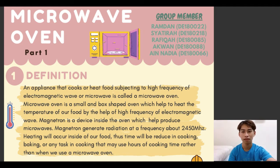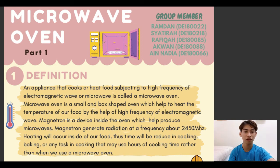A microwave oven is an appliance that cooks or heats food by subjecting it to high frequency electromagnetic waves. It is a small, box-shaped oven that heats food using high frequency electromagnetic waves. The magnetron is a device inside the oven that produces microwaves and generates radiation at a frequency of about 2450 MHz.